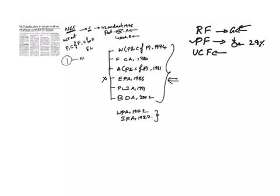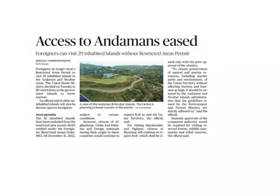The third thing is unclassified forests. These are those where there is no restriction on the cutting of the trees and grazing of the cattle. They constitute 18% of the total forest in the country. Next article is, access to Andaman's eased.